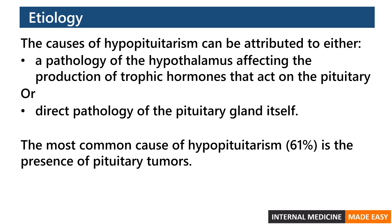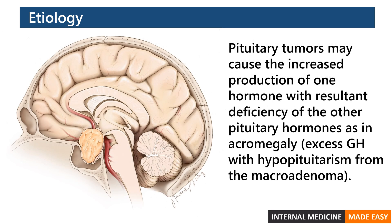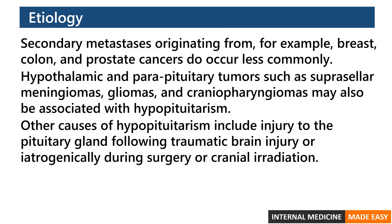The most common cause of hypopituitarism is the presence of pituitary tumors. Pituitary tumors may cause increased production of one hormone with resultant deficiency of the other pituitary hormones, as in acromegaly, where there is excess growth hormone with hypopituitarism from the macroadenoma. Secondary metastases originating from breast, colon, and prostate cancers do occur less commonly.